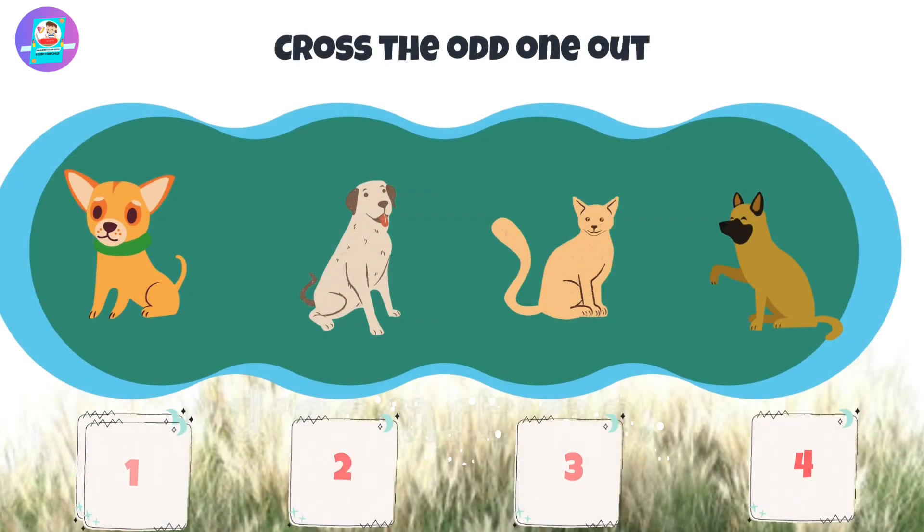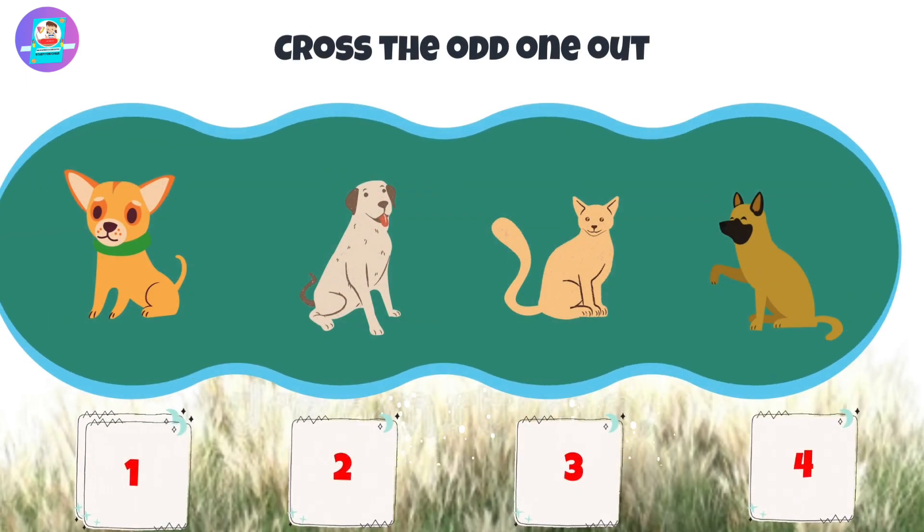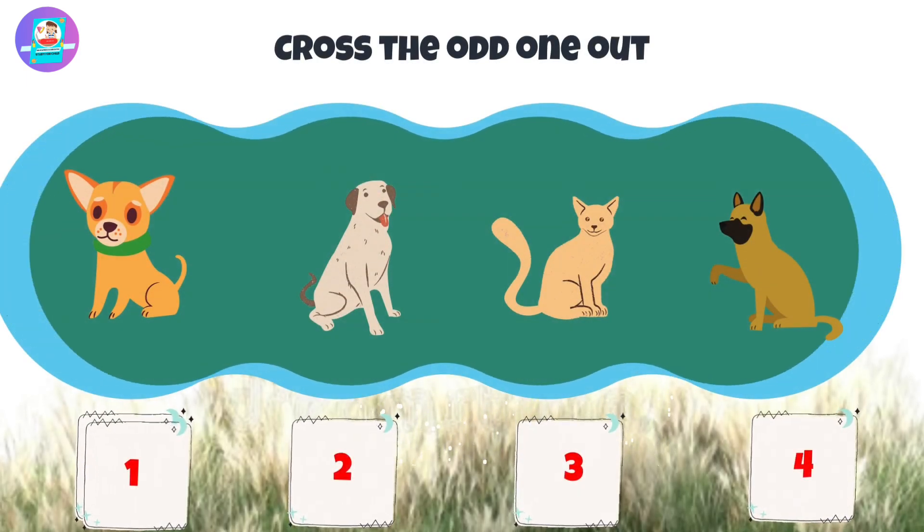There are 4 pictures: 1, 2, 3, 4. Put the odd one out.